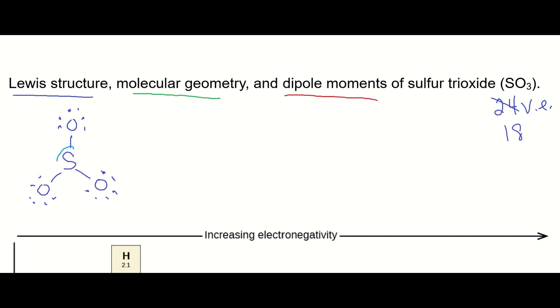Now, you'll notice the central sulfur does not have an octet. It's got six valence electrons right now, so we can take a lone pair from one of the terminal oxygens and make another covalent bond, in this case a double bond. So let's do that. We'll just take it from up here, make a double bond.